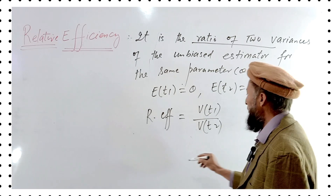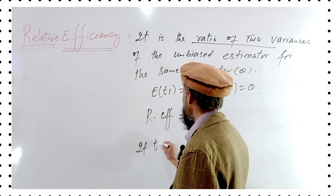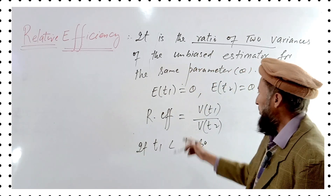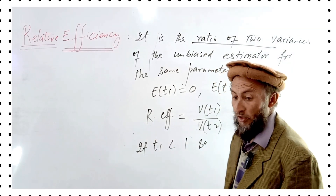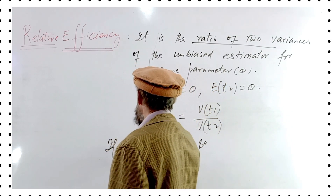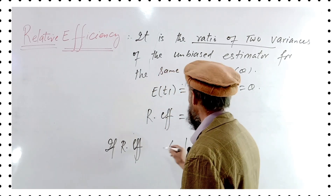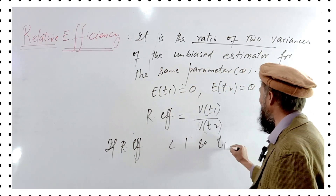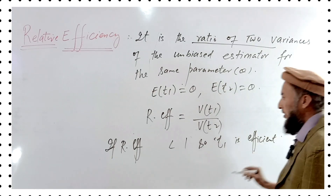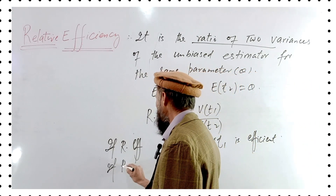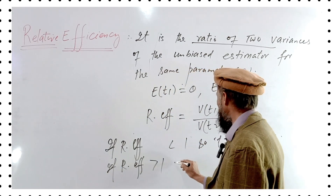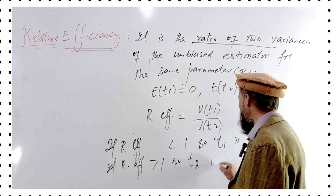If the relative efficiency F is less than 1, then T1 is the efficient estimator. If the relative efficiency F is greater than 1, then T2 is the efficient estimator.